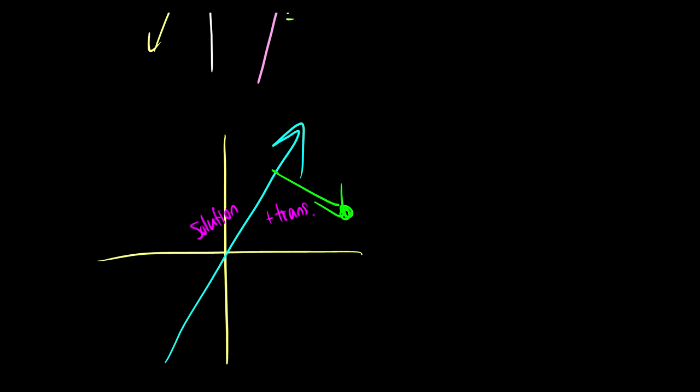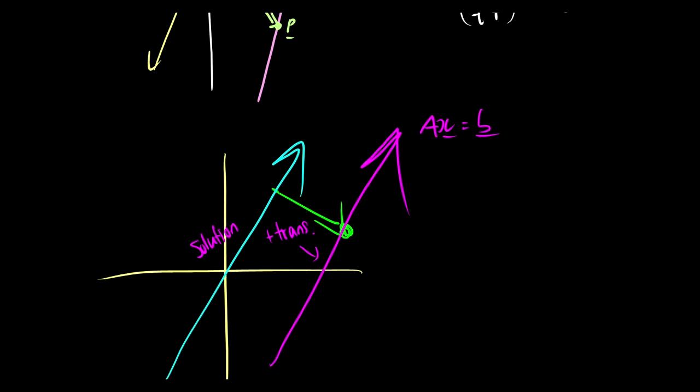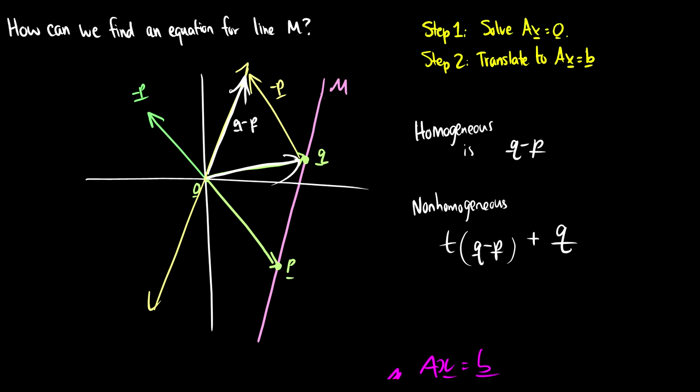And we get the resulting vector here, or our resulting solution here, which is the solution to ax is equal to b. So that is a visual way of solving for a line. And hopefully this makes a little bit more intuitive sense of how the translations work.